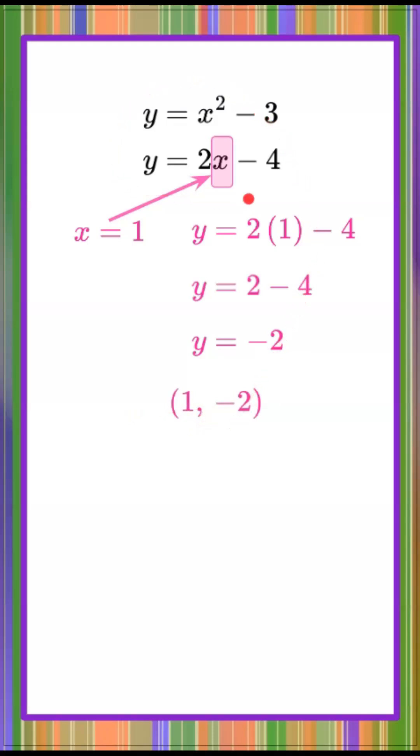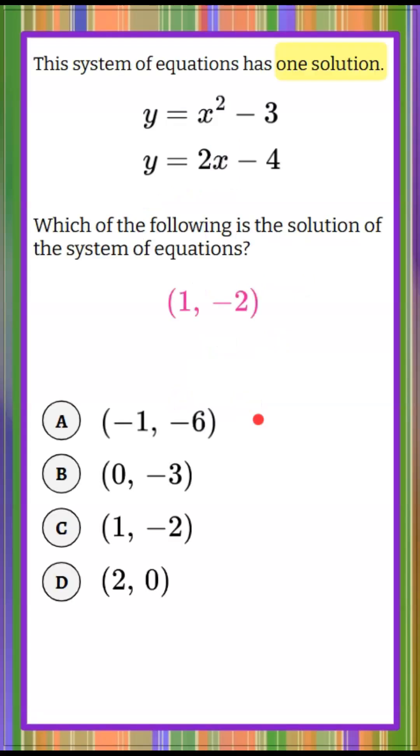If I graphed these two equations, the quadratic and the line would intersect at this point in the coordinate plane. So let's answer our question. The one solution of this system of nonlinear equations is 1 negative 2, which is answer choice C.